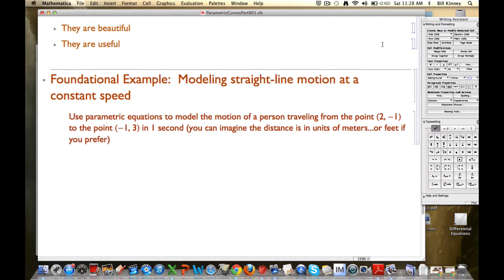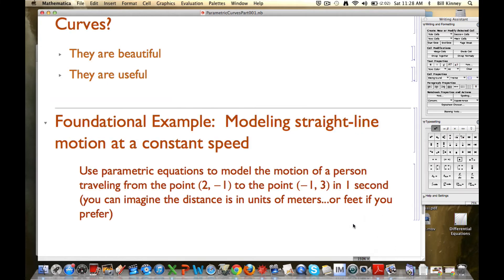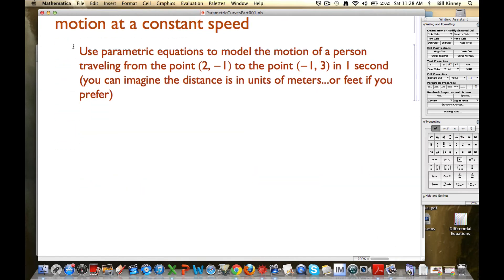So here's the example. Use parametric equations. Let me make this bigger here. Use parametric equations to model the motion of a person traveling between two points. Say the point (2, -1) to the point (-1, 3) in one second. This here is a 1. It's not an I. In one second.